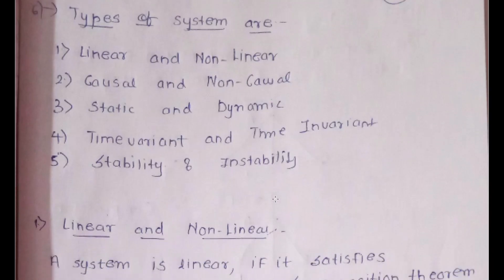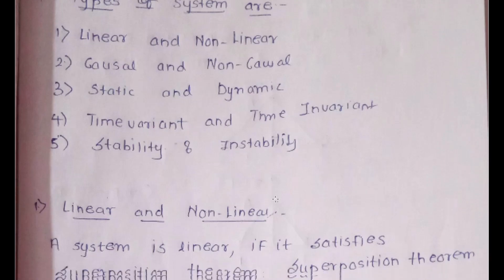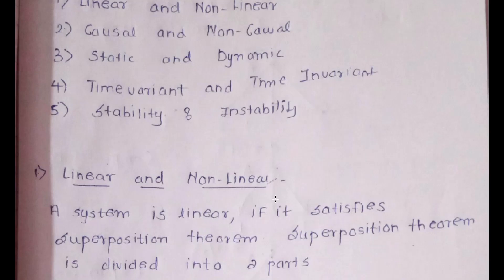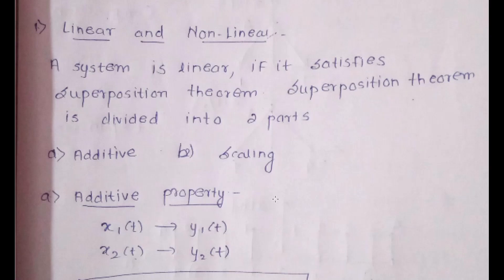Next is the types of systems. There are different types: linear, non-linear, causal, non-causal, static, dynamic, time variant, time invariant, stable, and unstable. We'll understand the theoretical definition of each, and once clear on theory we'll solve numericals so you can apply the theory.